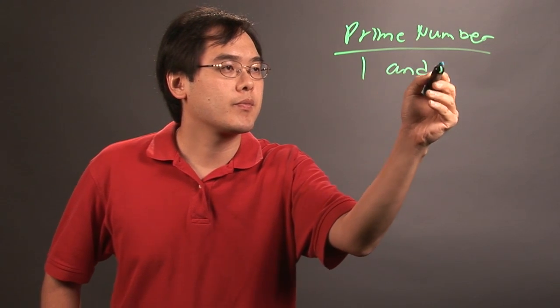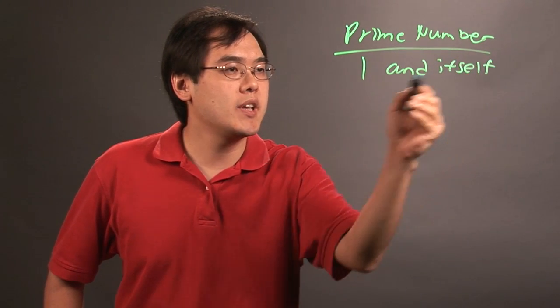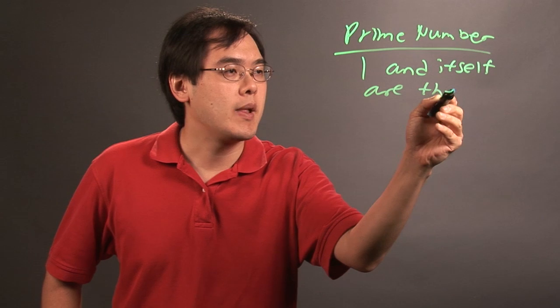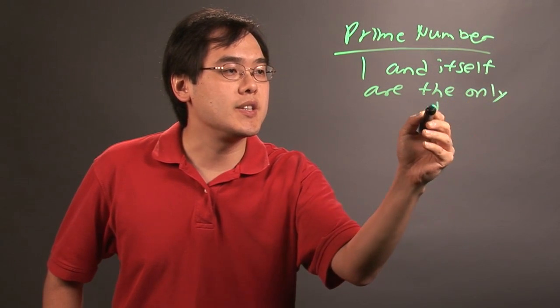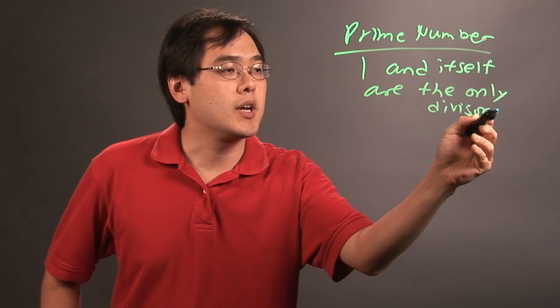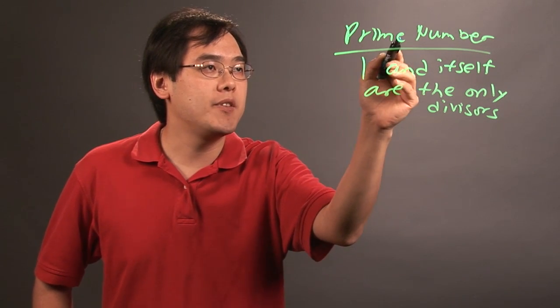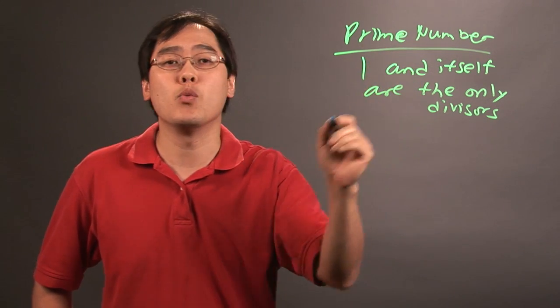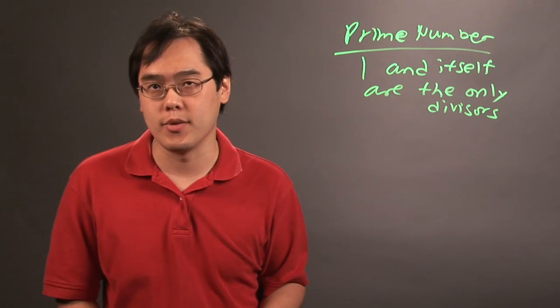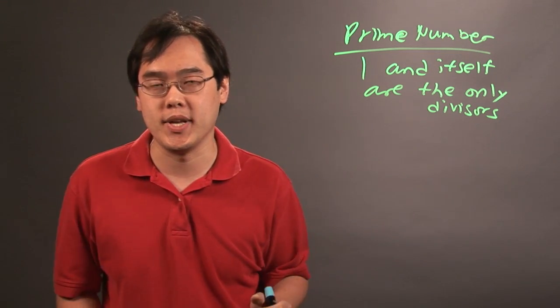So one and itself are the only divisors. Now keep in mind this does not include one because one does not fit the description of a prime number. In order to be a prime number, it has to be one and another unique number. So you can't say one and one because that's a repeat.